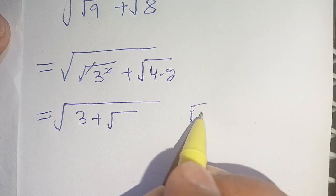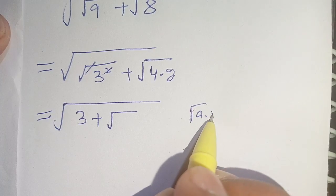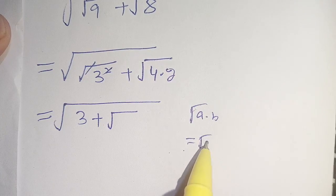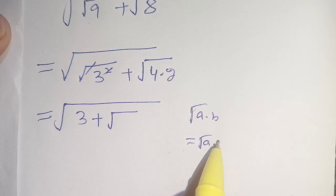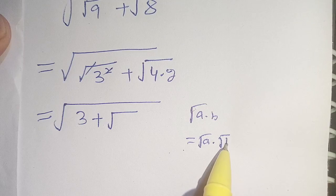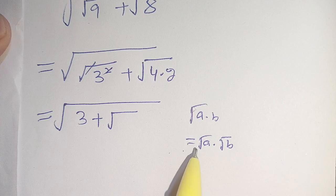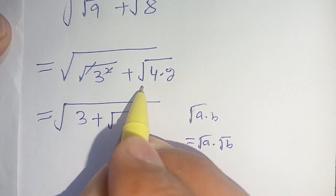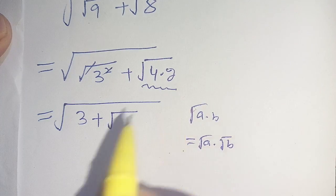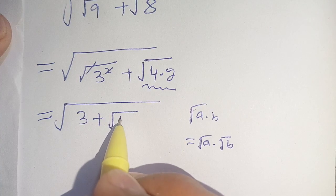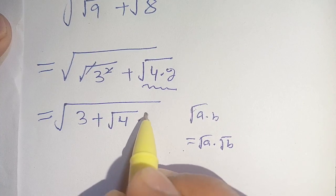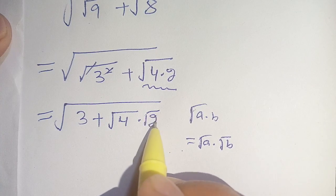We know that square root of a times b is equal to square root of a times square root of b. Now, applying this identity on the second term, we get square root of 4 times square root of 2.